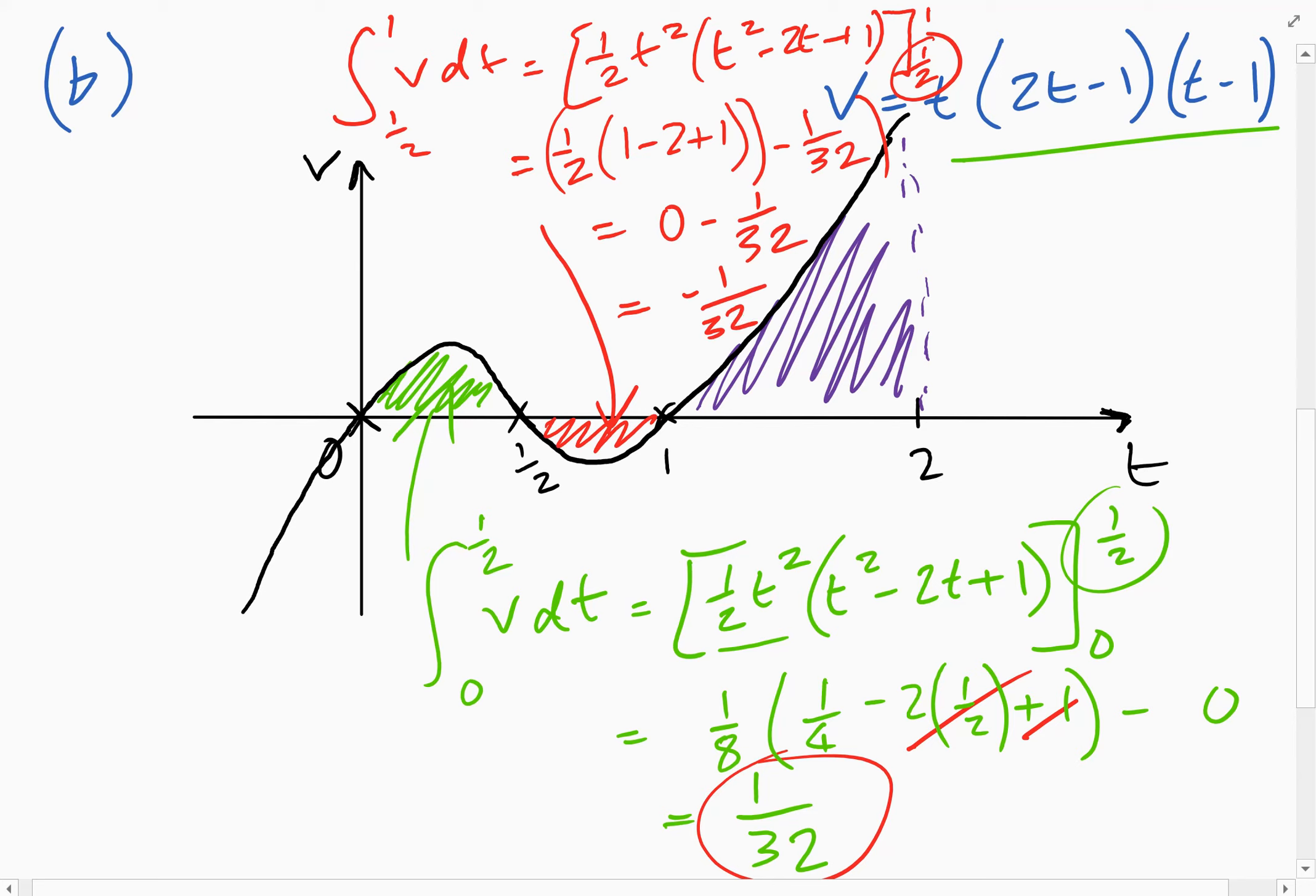So we've got zero minus one over 32. So the red area is minus one over 32. I should say the integral here, the integral between a half and one is minus one over 32. The actual area has to be positive, can't have a negative area. So that red area is one over 32. If we do a similar thing for this area here, so we would need to integrate between one and two here. As I said a minute ago, there's only three marks for this. So you probably could just put that on your calculator. But I think it's important when you're integrating to get used to showing what you get when you integrate.